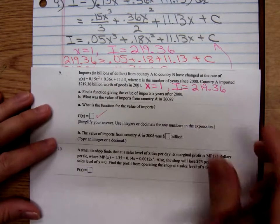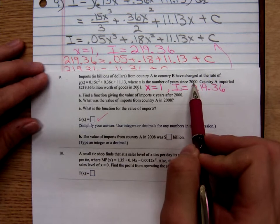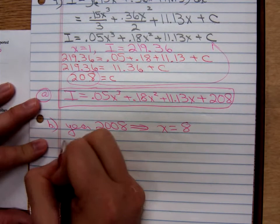What would x be in that case? Remember, x is the number of years since 2000. How many years have passed since 2000 and 2008? Eight years.